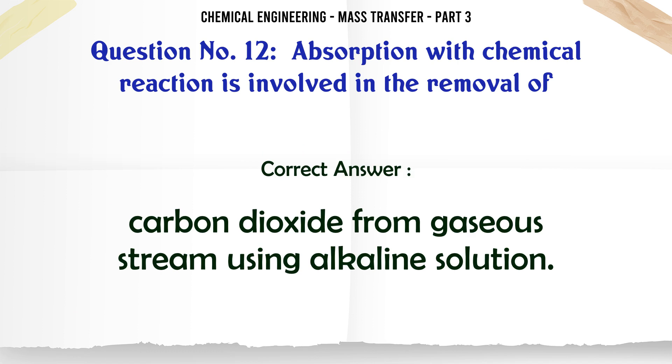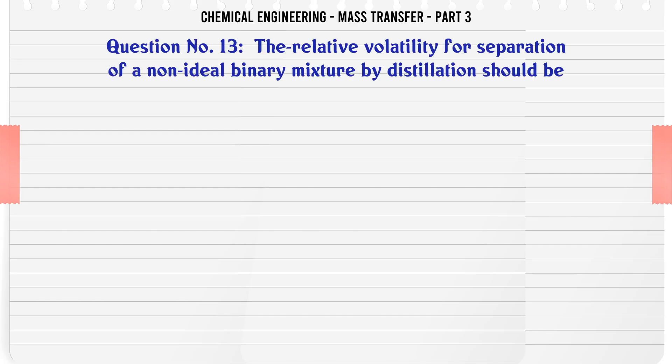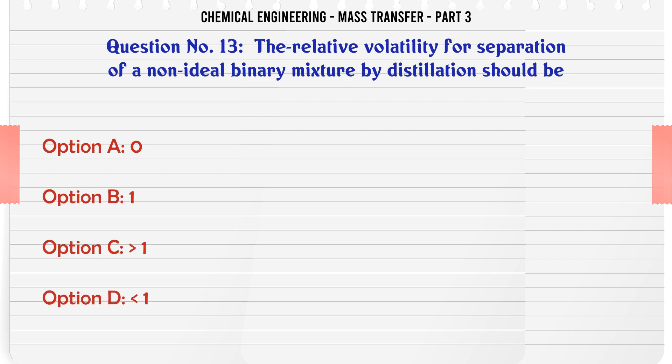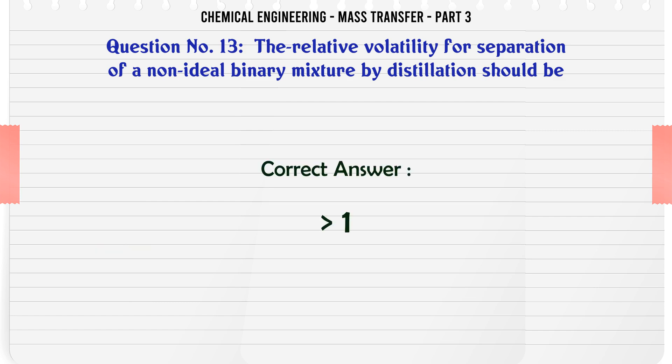The relative volatility for separation of a non-ideal binary mixture by distillation should be: A) zero, B) one, C) greater than one, D) less than one. The correct answer is: greater than one.